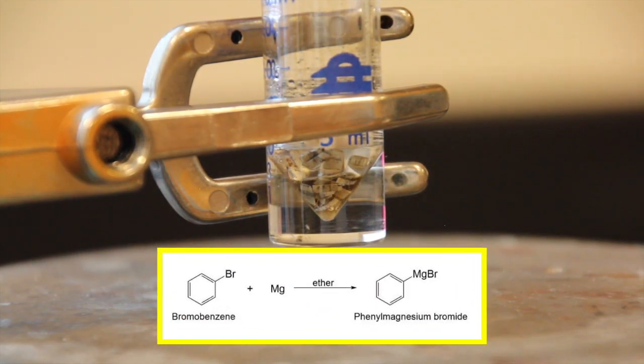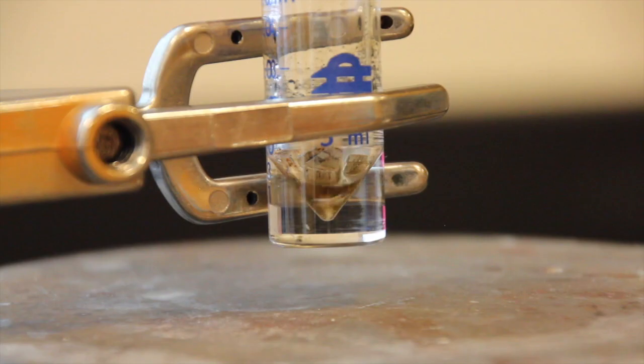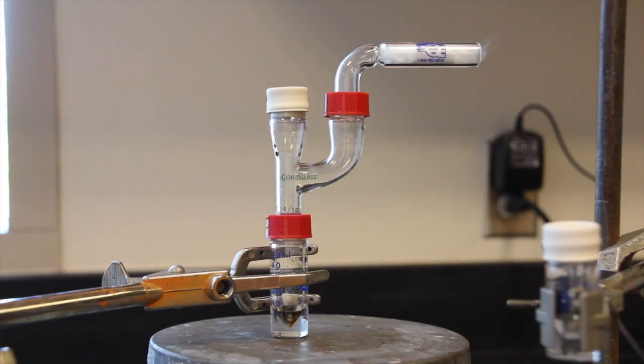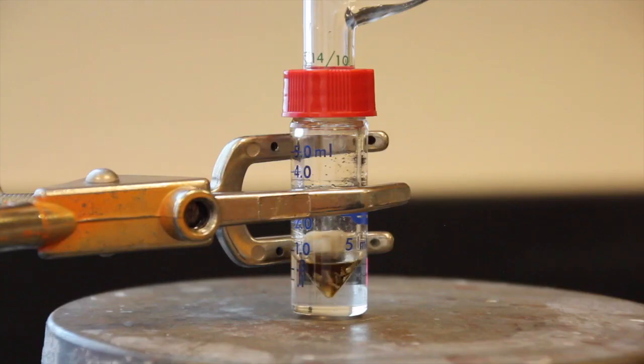It may be necessary to heat the mixture using very low heat on the hot plate. Remember, ether has a low boiling point of 35 degrees Celsius and you do not want it to boil away. Once the bubbling has started, the apparatus should be removed from the heat and the bubbling should continue on its own. After the reaction is started, in addition to the bubbles, you should observe the formation of a brownish-gray cloudy solution.